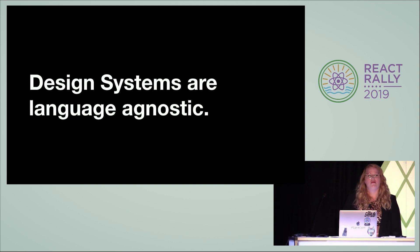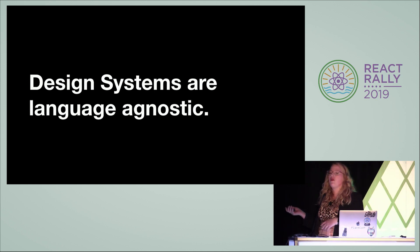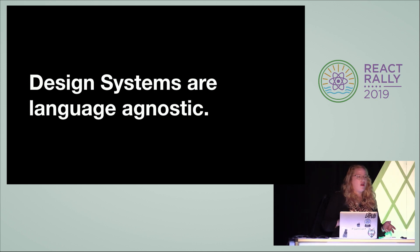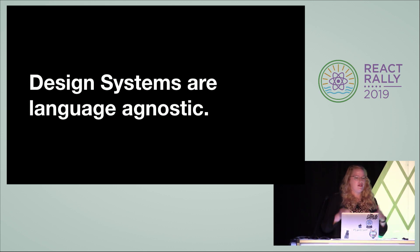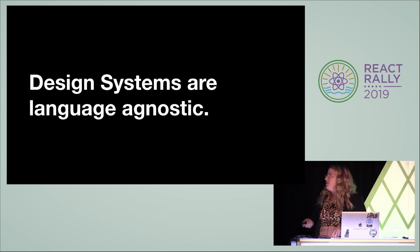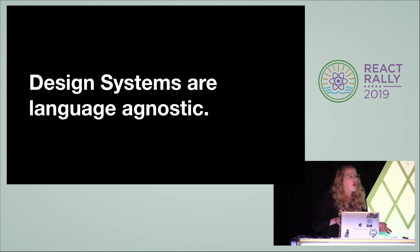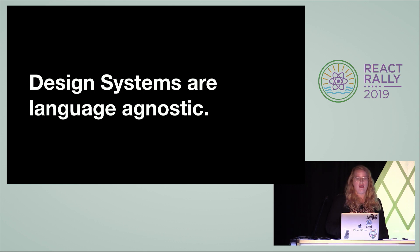I really think that design systems need to be language agnostic. Maybe if you're at a really small company, you might just have one framework for front end, but at most companies you're going to have more than one. At GitHub, most of GitHub.com is mostly Rails, but we have other teams who are using React and teams using just vanilla JavaScript. So our design system has to cater to all of these different teams building different things.